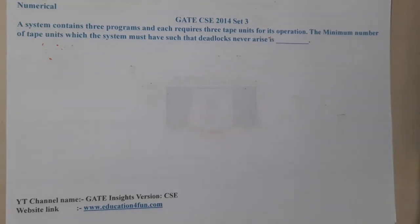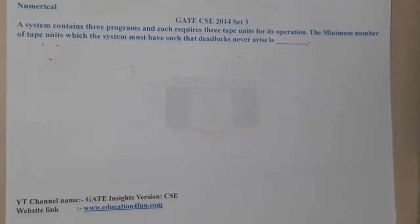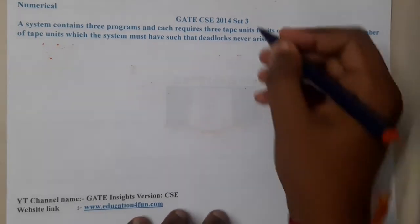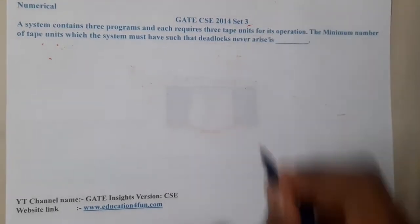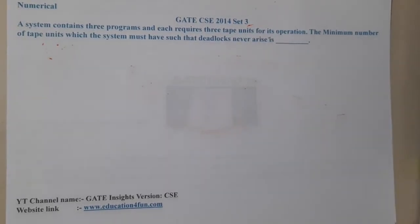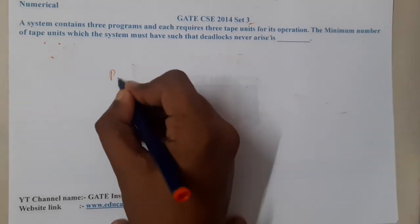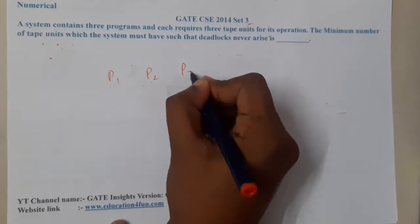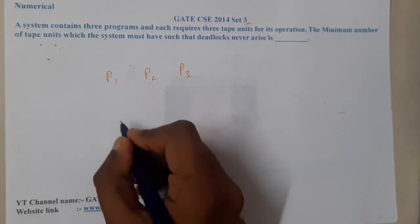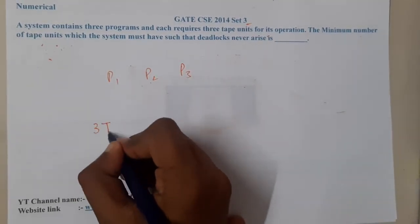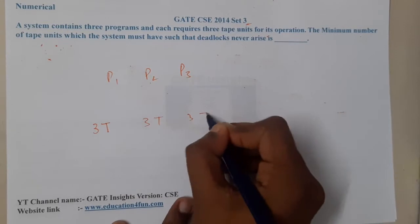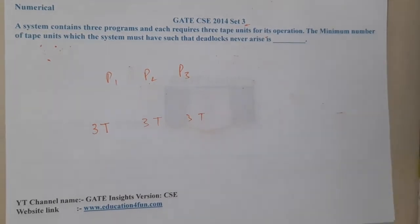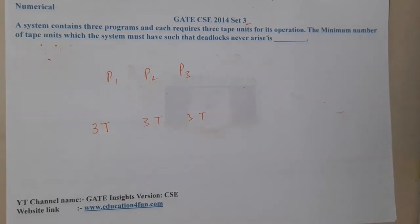Hello guys, we are back with our next lecture. This question belongs to GATE CSE 2014 Set 3. The given question is: a system contains three programs, and each program requires three tapes.